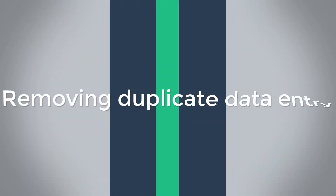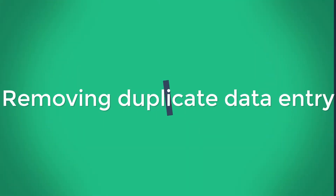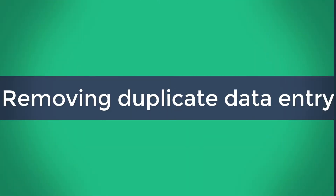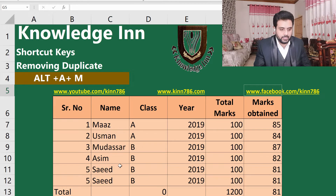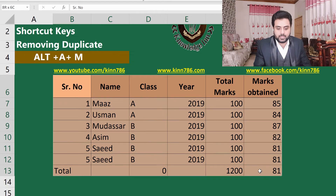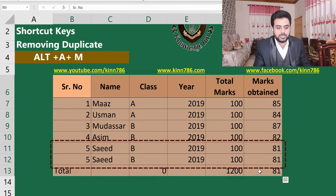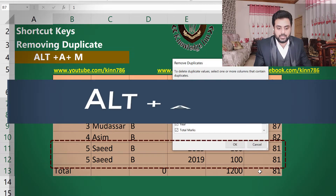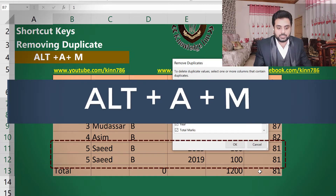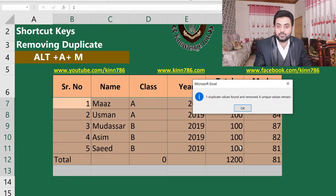Let's move to removing duplicates using a shortcut key. First of all, you have to select your data, then you simply have to press Alt+A+M. It will ask you which cells you want to select, and it will eliminate the duplicate rows from your data.